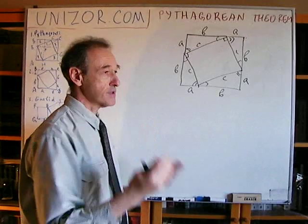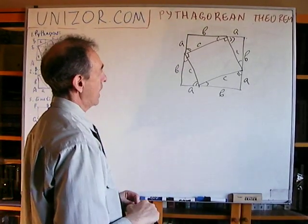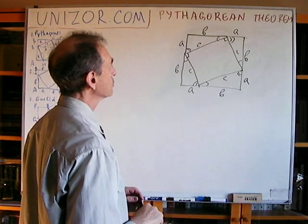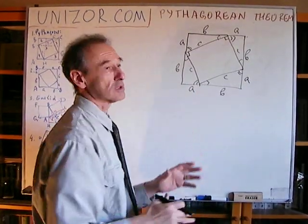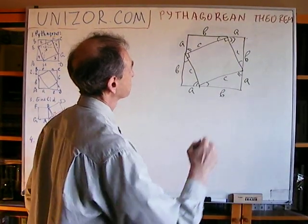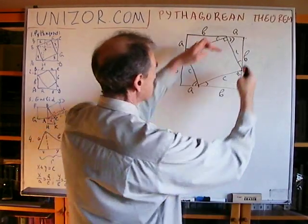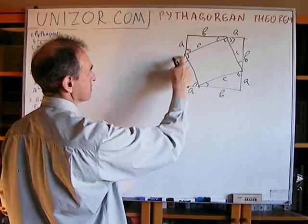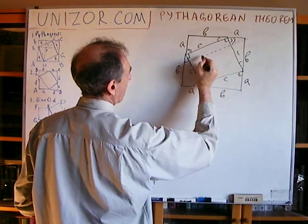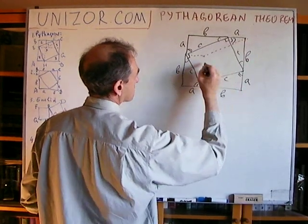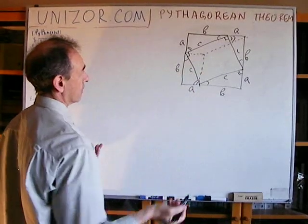What the theorem says is that this inner area is actually C squared. Now, what to do next is to perform the following rearrangement. Let's consider the top-right triangle and move it parallel to itself towards the bottom left. This will be moved to this position. Now these lines are obviously parallel, so this is a rectangle for obvious reasons — it's a parallelogram, so all sides are equal.